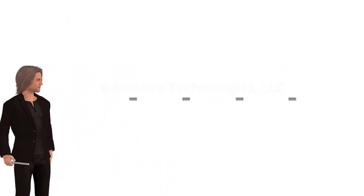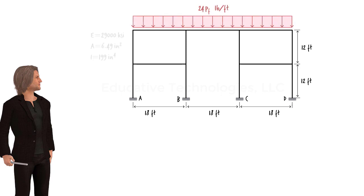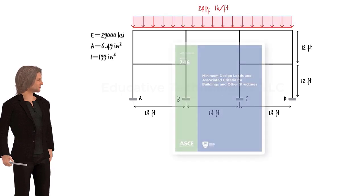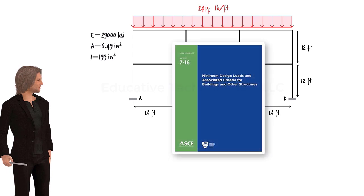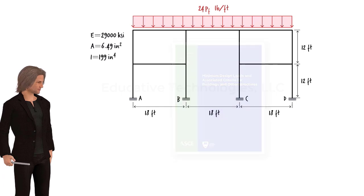Here is a two-dimensional view of the frame and the uniformly distributed snow load. To determine PF, we are going to use a design standard published by the American Society of Civil Engineers, referred to as ASCE 7-16. Here, roof snow load is expressed in terms of ground snow load using the following equation.